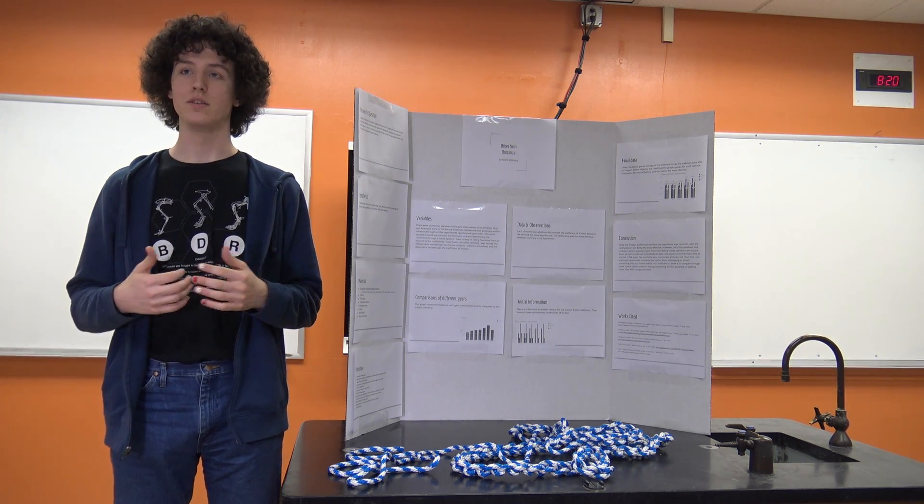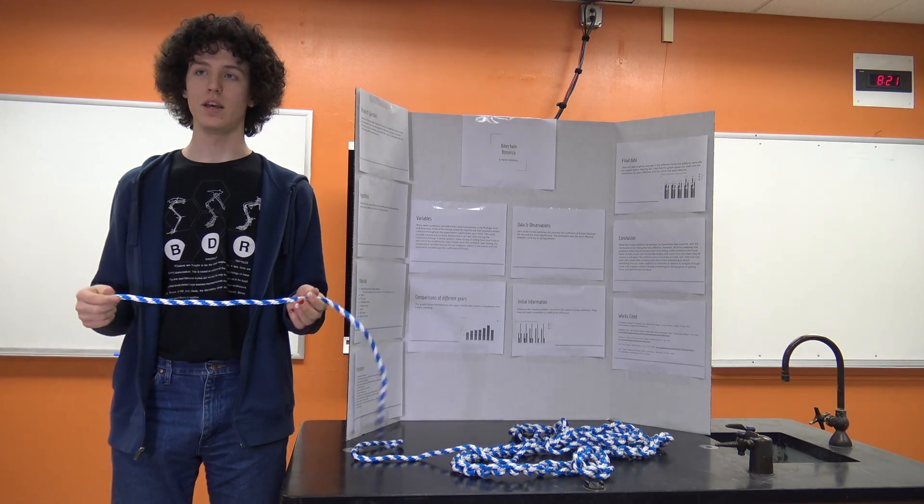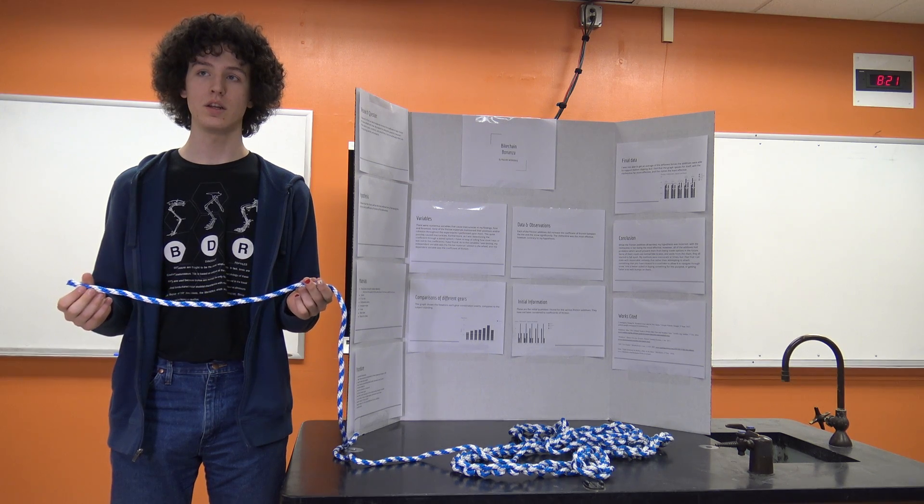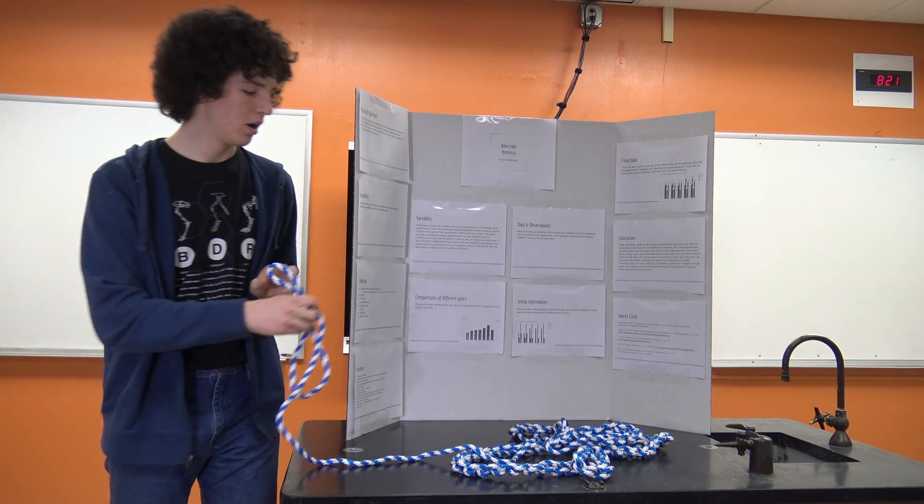What I found is that you cannot use the big rope because it interferes with the brake system even if you have it disconnected. The wheel will not turn with the big rope, so I wasn't able to put it into my graphs.